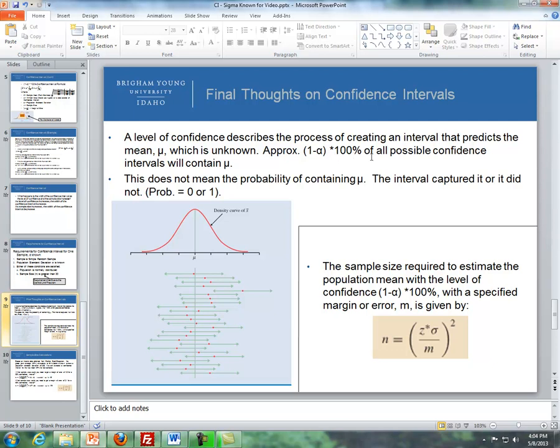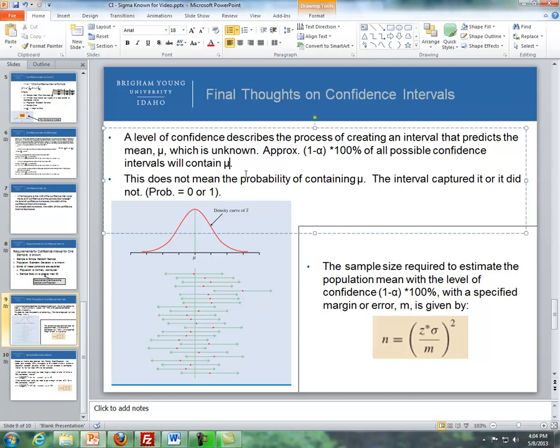Approximately 95% of all possible confidence intervals will contain mu. What this means is if we were to do this a gazillion times, we would capture the true mean 95% of the time.